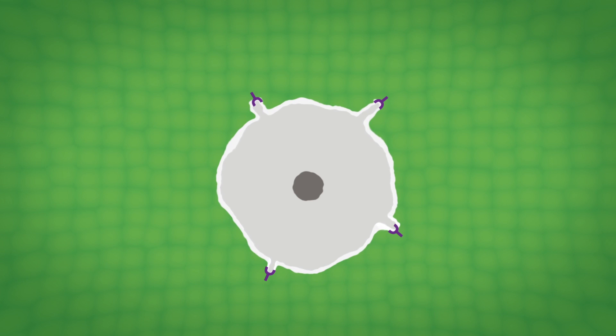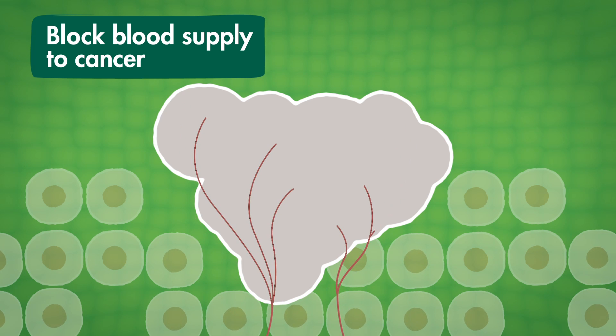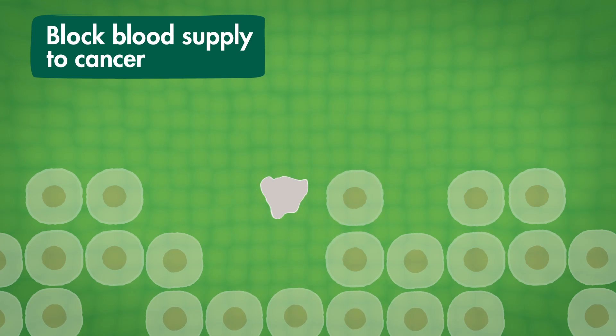Targeted therapies can work in one of four ways. They can block the growth of new blood vessels in cancer cells. This starves the cancer of nutrients and oxygen and it shrinks and gradually dies.